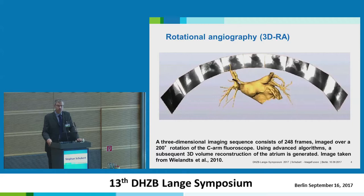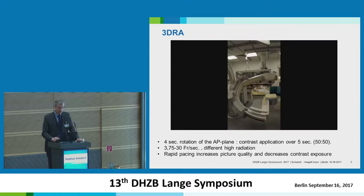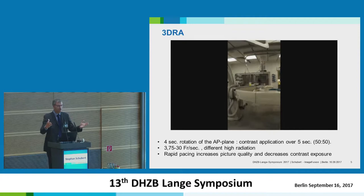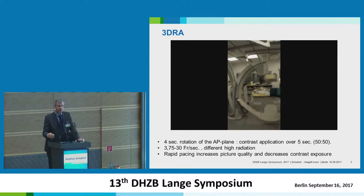If we talk about image fusion, the integration of this 3D picture was done by 3DRA — rotational angiography — which is used in the CAS lab with the patient already on the table. It's a rotation of one arm of the machine, producing a nearly 200-degree picture of the patient. In the CAS lab, if you have a biplane machine, you need to be aware of the other arm, but then the arm rotates around the patient lying on the table.